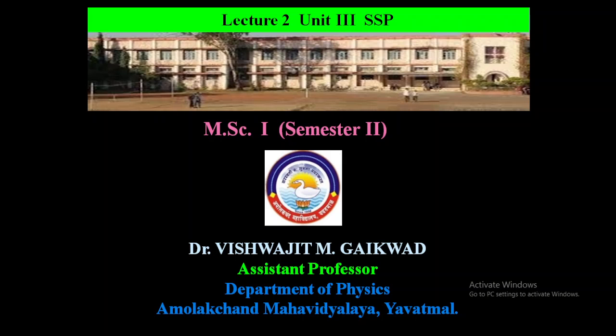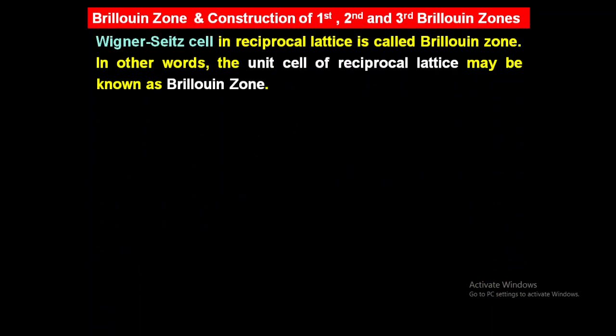Hello students, this is lecture number two, unit number three: solid state physics. In this lecture we are going to study Brillouin zones and their construction. We will see the construction of first, second, and third Brillouin zones. Brillouin zone is nothing but the Wigner cell in reciprocal lattice — in other words, the unit cell of reciprocal lattice may be known as Brillouin zone. The concepts of reciprocal lattice and Wigner cell we have already studied in our previous lectures.